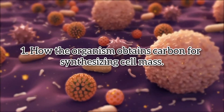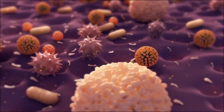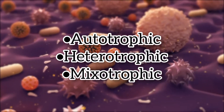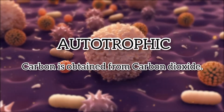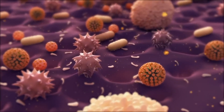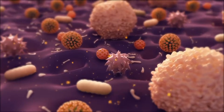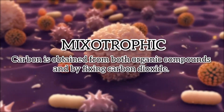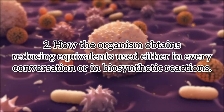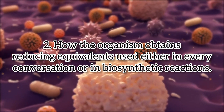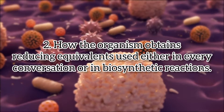All microbial metabolisms can be arranged according to three principles. The first principle is how the organism obtains carbon for synthesizing cell mass. Under this first principle, there are the autotrophic, heterotrophic, and mixotrophic. Autotrophic organisms obtain carbon from carbon dioxide; heterotrophic organisms obtain carbon from organic compounds; and mixotrophic organisms obtain carbon from both organic compounds and by fixing carbon dioxide.